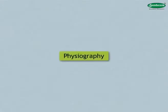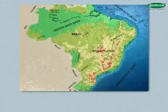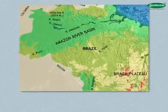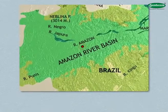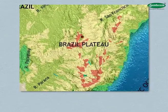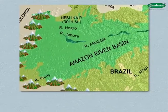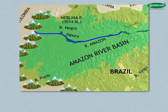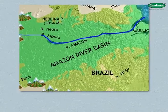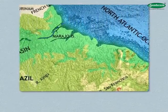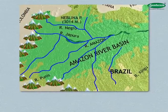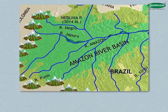In terms of physiography, the country can be divided into two parts: the Amazon Basin and the Brazilian Plateau. The Amazon River rises in the Andes Mountains, flows towards the east, and meets the Atlantic Ocean. The alluvium brought by the Amazon and its tributaries has given rise to a vast flat plain in the northern part of Brazil.